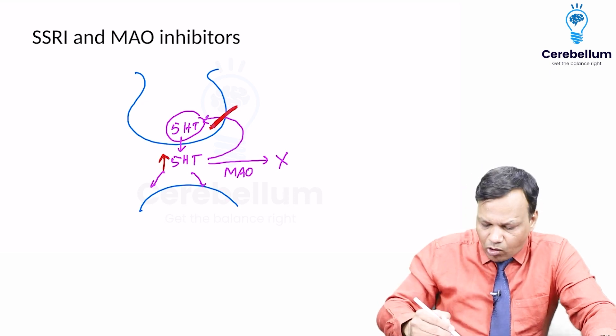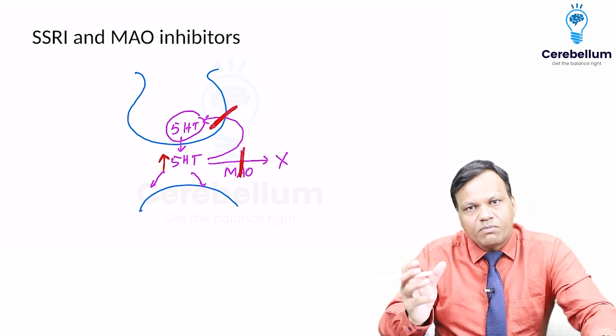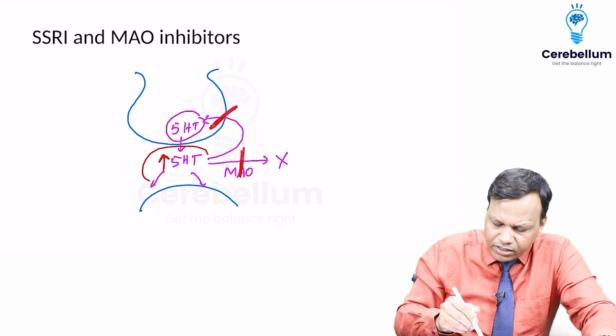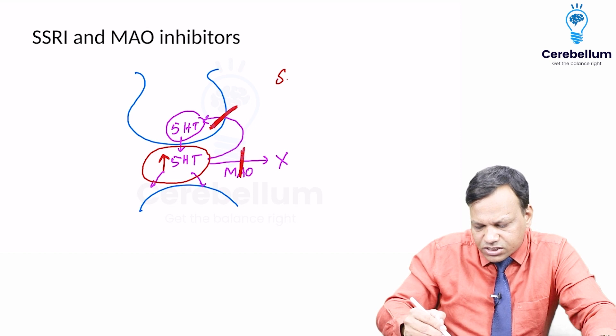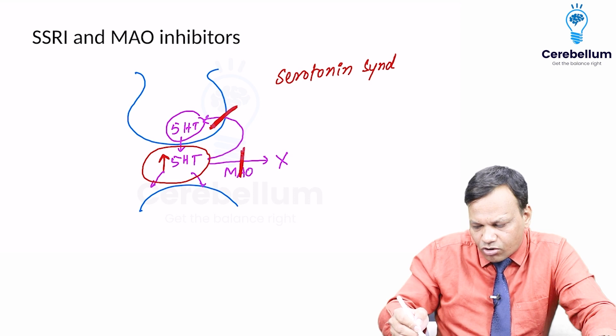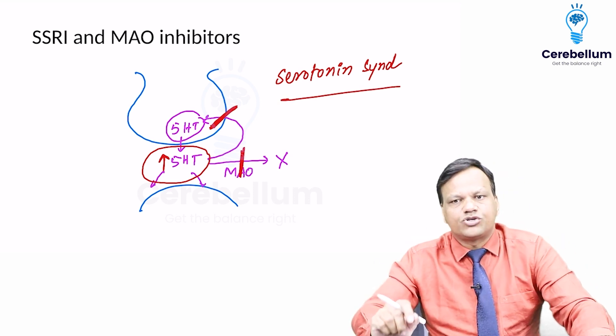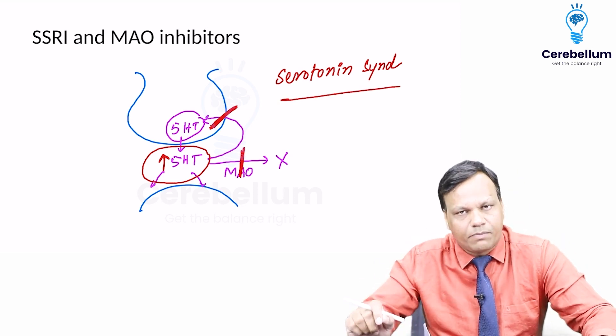But if we give MAO inhibitor also, that increased level cannot be metabolized. So there will be plenty of serotonin which results in serotonin syndrome. Due to risk of developing serotonin syndrome, SSRI should not be given with MAO inhibitors.